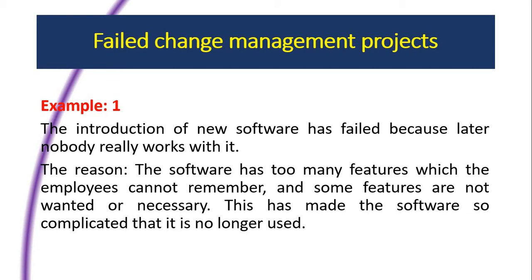The first example is the introduction of new software that fails because later nobody really works with it. This mostly happens when an organization adopts a new technology. Technological changes can come from internal or external environments where the business needs to change according to developments in technology. Many organizations introduce new software for their working processes, but this project has failed in many organizations.